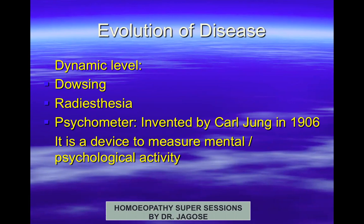However, in the olden days, there were people known as dowsers. A person who is a dowser uses the method of dowsing, also known as radiesthesia. The dowser has certain powers whereby he can identify whether to dig at a particular point in the soil to get water or oil. He is able to identify the location of these resources below the soil.